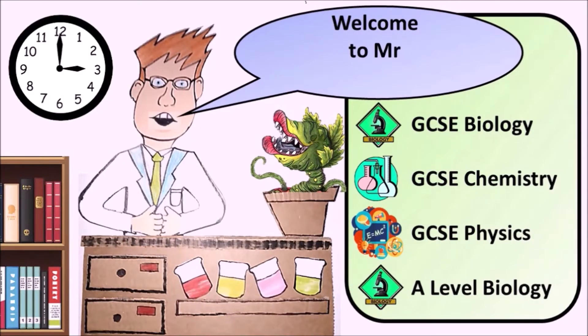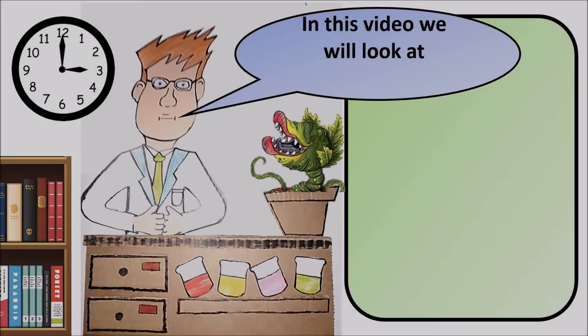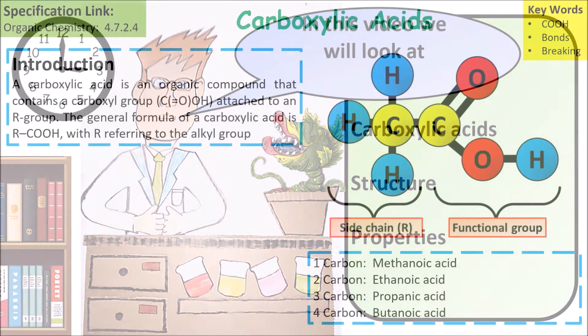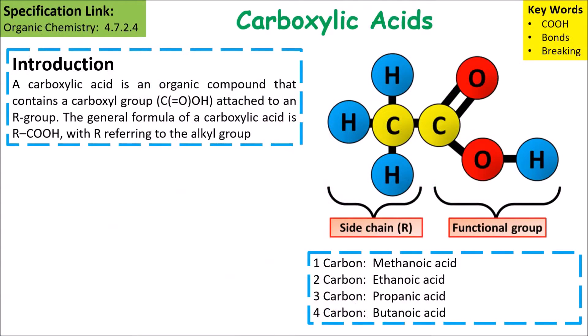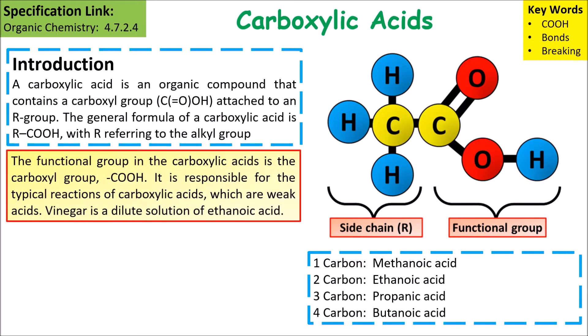Welcome to Mr Chalk's revision tips. In this video we will look at carboxylic acids, their structure and their properties. A carboxylic acid is an organic compound that contains a carboxyl group, which is the functional group of the carboxylic acid.